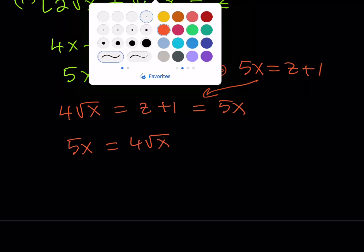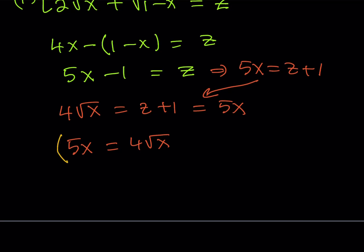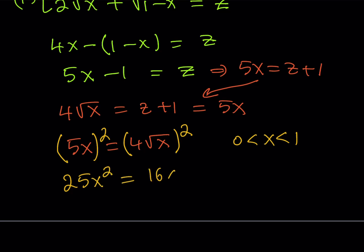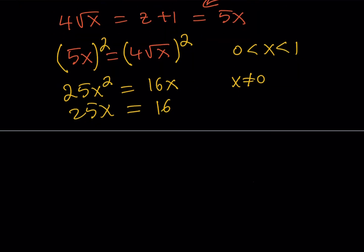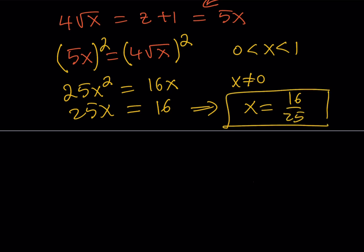In this case, we can go ahead and square both sides, paying attention to the domain — remember, x needs to be strictly between 0 and 1. Squaring both sides gives 25x² equals 16x. Since x does not equal 0, we can divide both sides by x, giving 25x equals 16. Dividing both sides by 25 gives x equals 16 over 25, which satisfies the domain criteria.